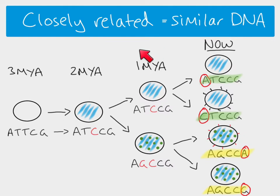What we have here is an evolutionary tree, also called a phylogenetic tree — it shows the evolutionary relationships between species. From this we can understand why more similar DNA sequences in present-day species means they are more closely related.